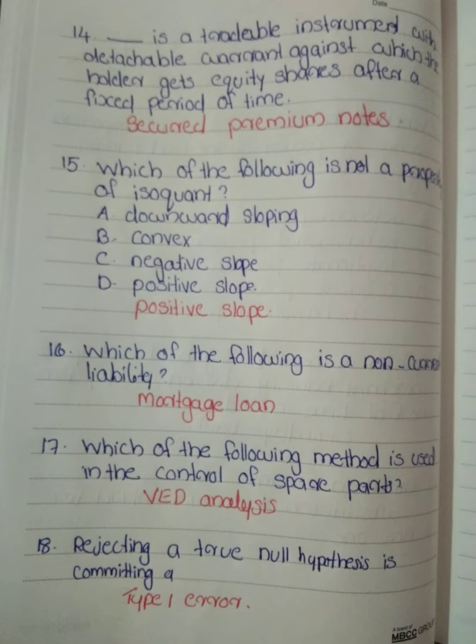Which of the following is not a property of an isocost? Options: Downward sloping, convex, negative slope, positive slope. Answer: Option D — Positive slope.